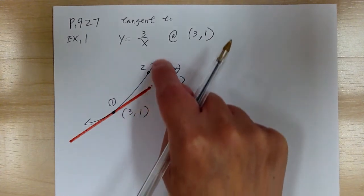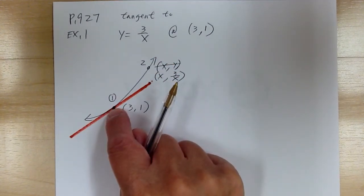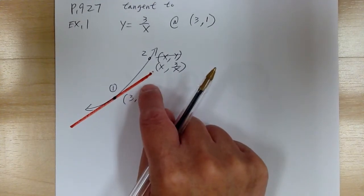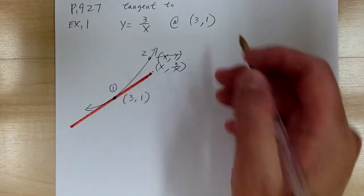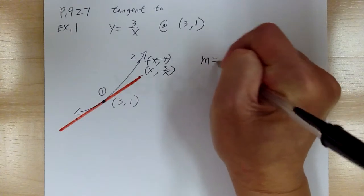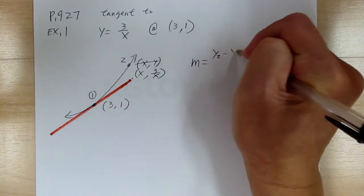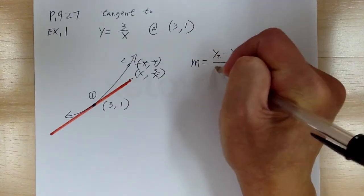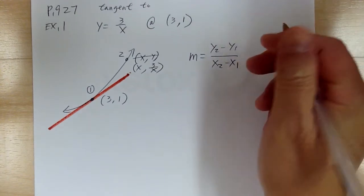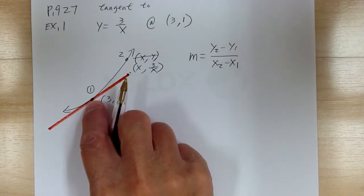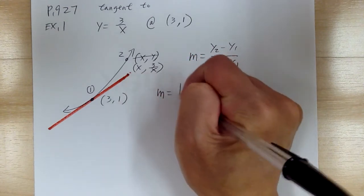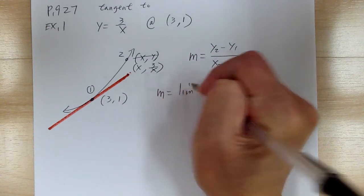Because this is a curve, you only have one point. To find the slope, you have to use the limit. You start with the definition: slope equals y2 minus y1 over x2 minus x1. But because you only have one point, you have to use the limit, so slope equals the limit of...